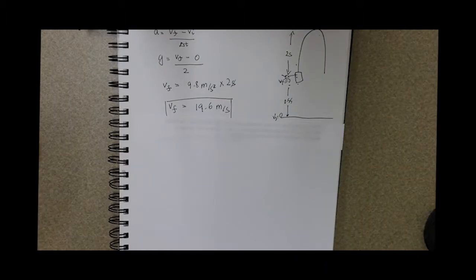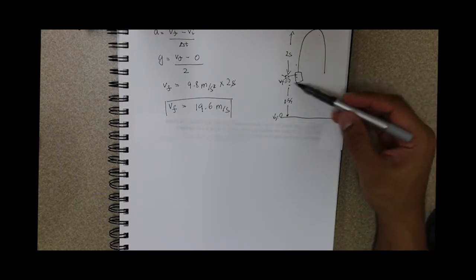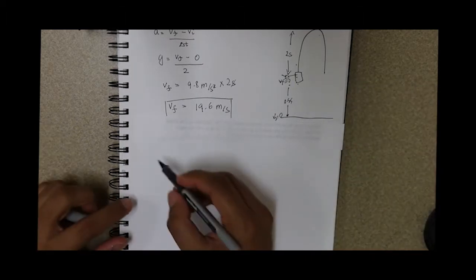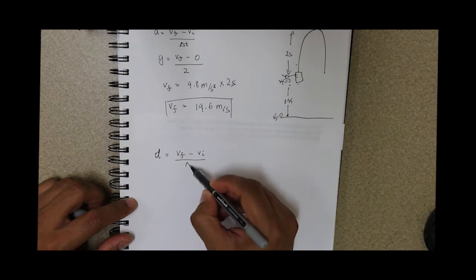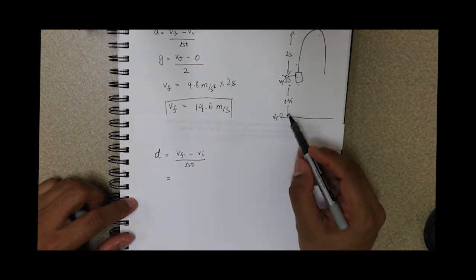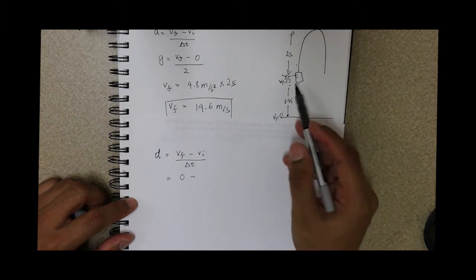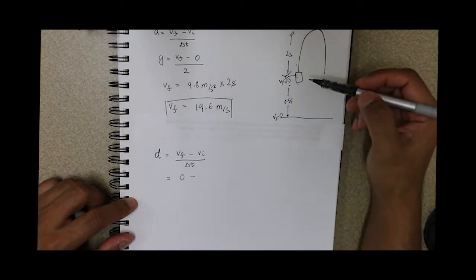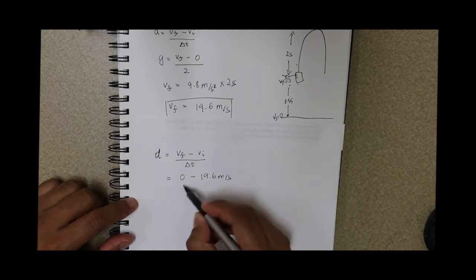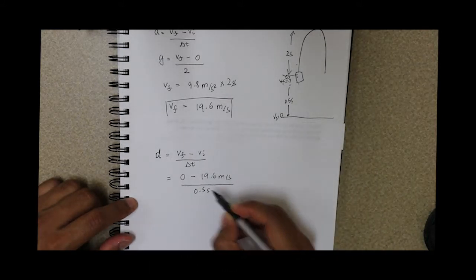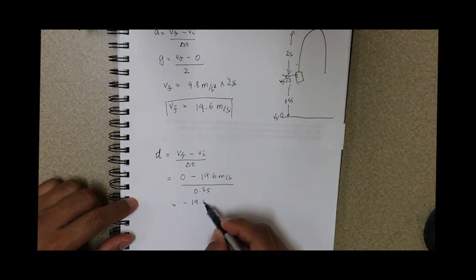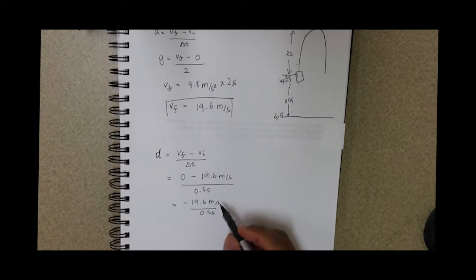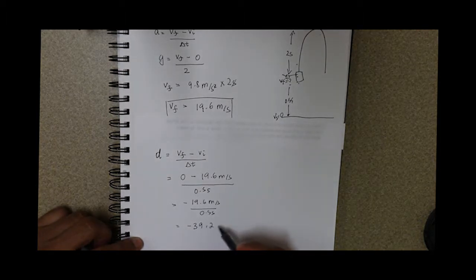Now, what is the deceleration as the cart comes to a stop? Deceleration equals velocity final minus velocity initial over change in time. Velocity final is zero because the cart comes to a stop. So zero minus 19.6 meters per second — our velocity initial from the free fall — over delta T of 0.5 seconds gives us negative 19.6 over 0.5, which is negative 39.2 meters per second squared.